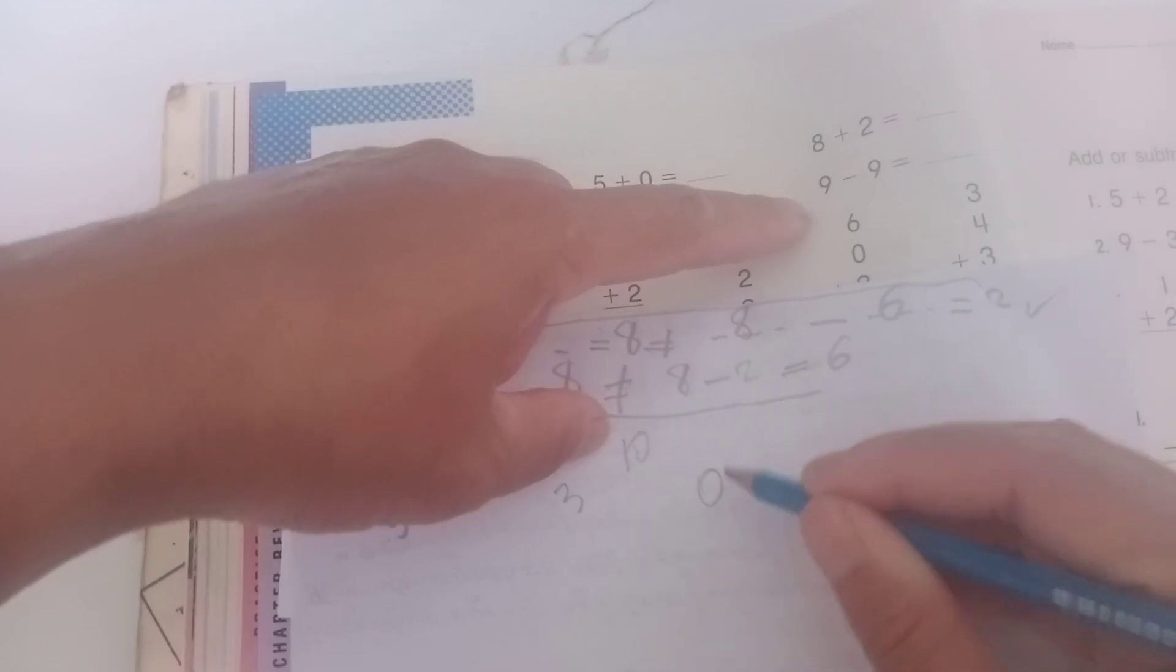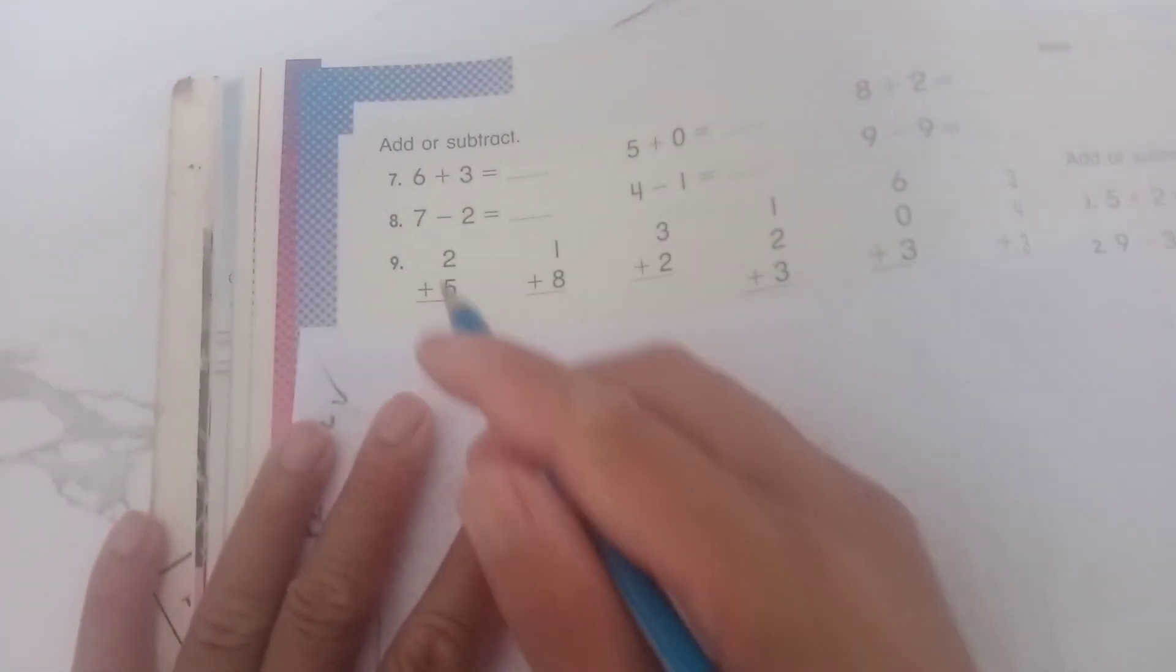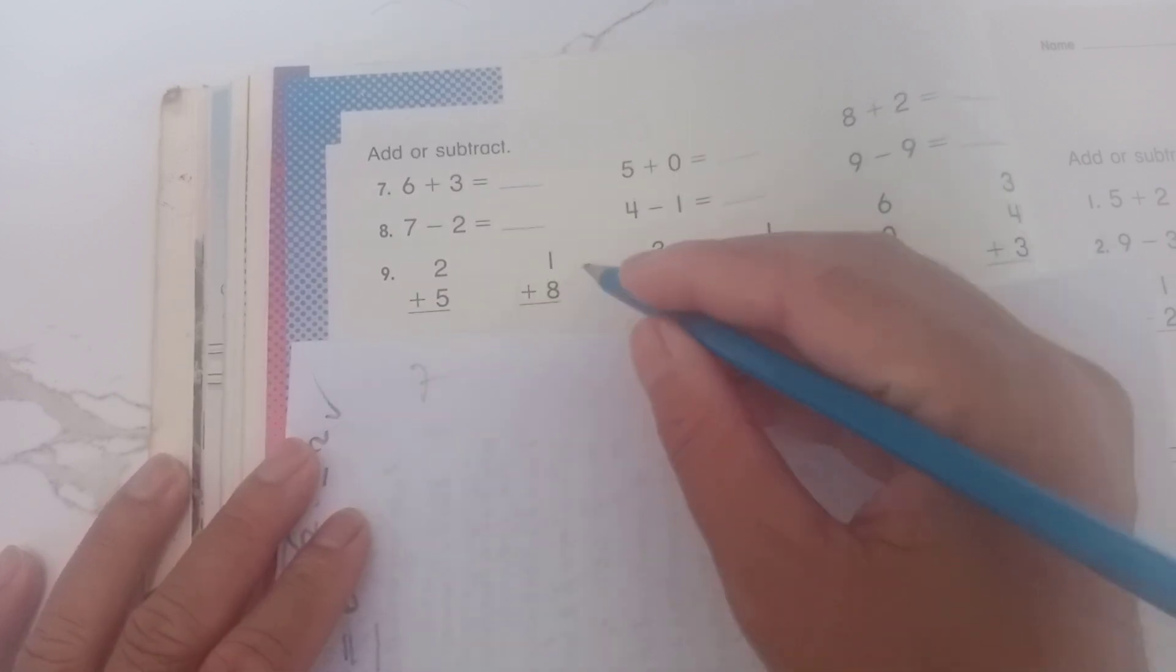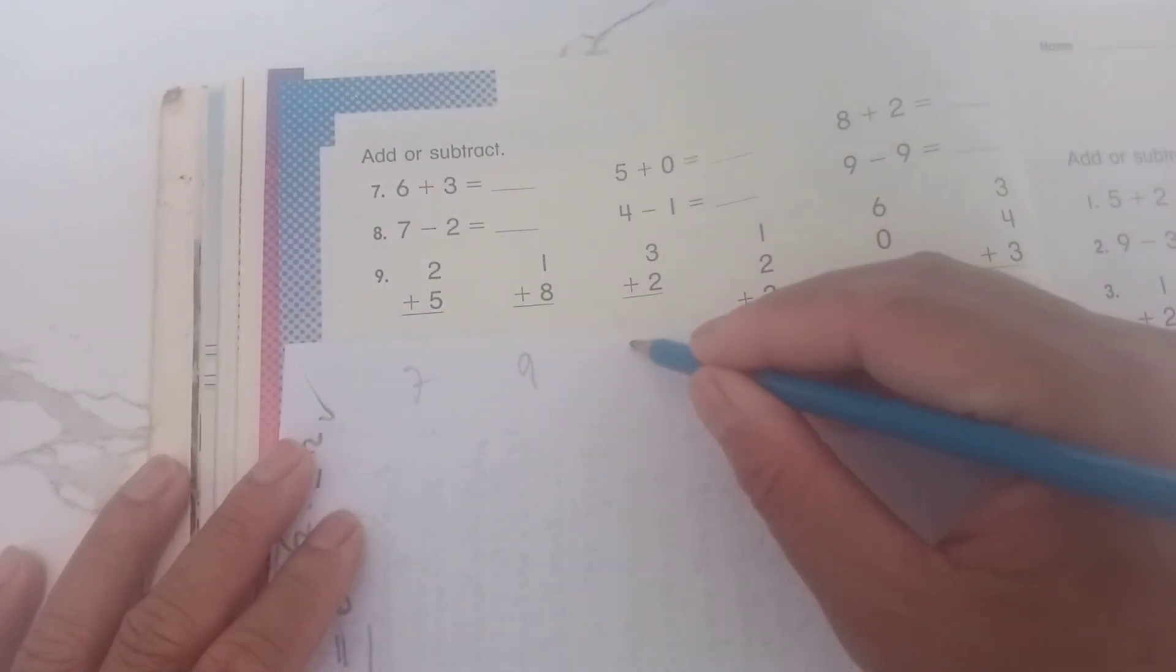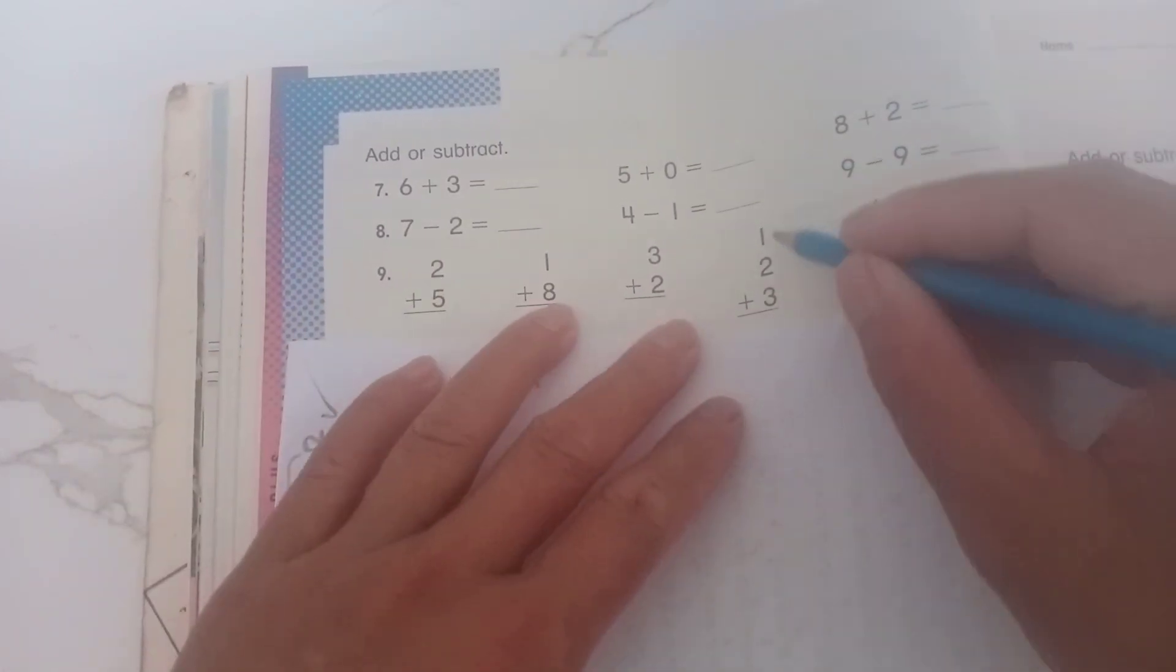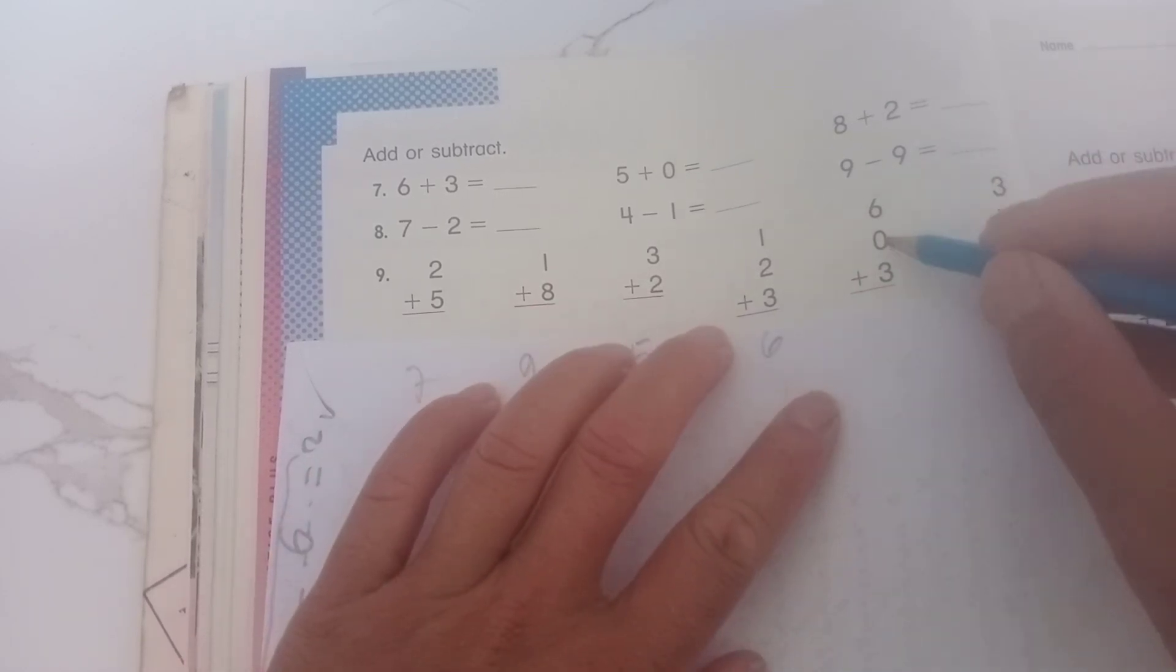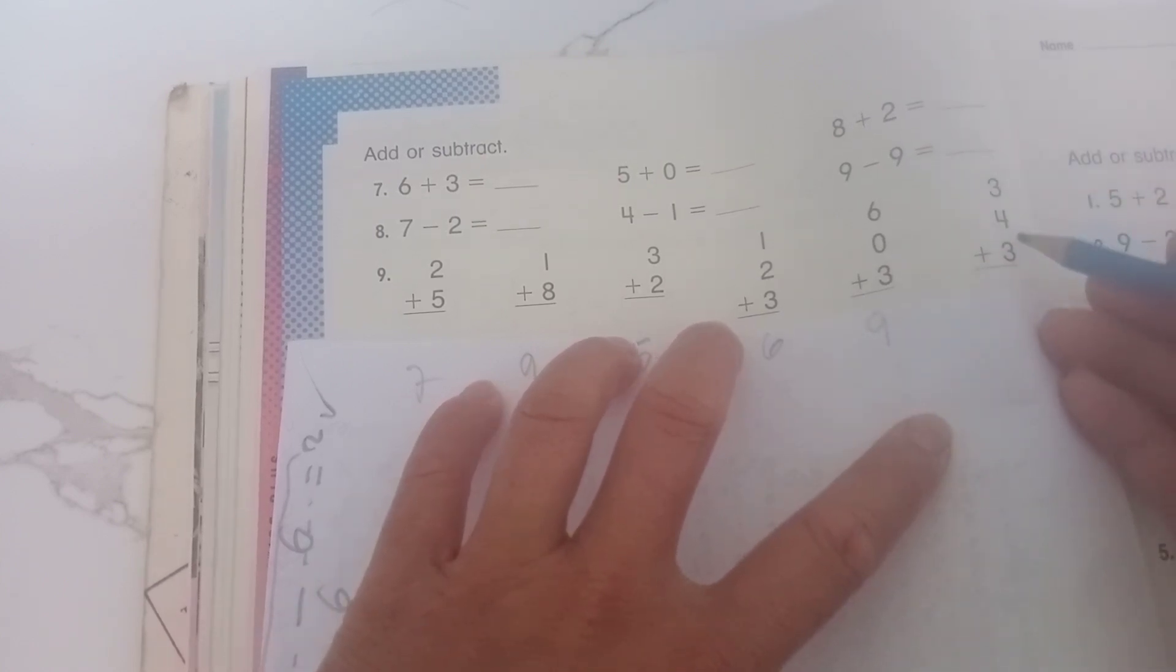Two plus five equals seven, one plus eight equals nine, three plus two equals five, one plus two equals three. Three plus three equals six, six plus zero equals six, six plus three equals nine, three plus four equals seven, seven plus three equals ten. Number ten, you can see together.